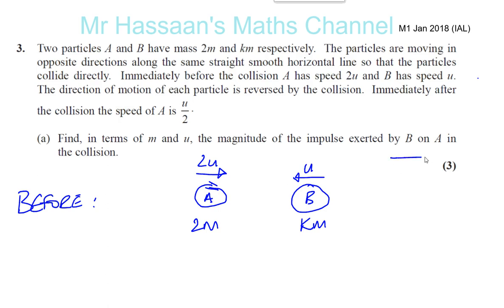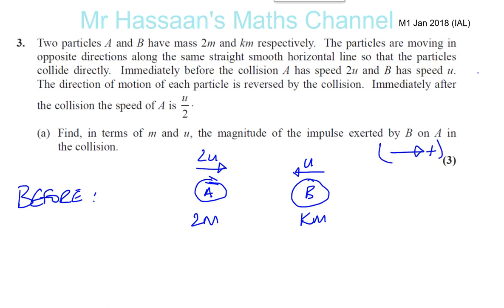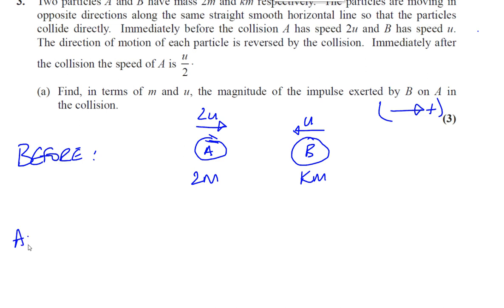Now what I'm going to do is I'm going to take this direction as a positive in my calculations. That's just what we'll do within a minute. Now, after the collision, you've got the same A and the same B. But this time, after the collision, they still have the same masses, of course.